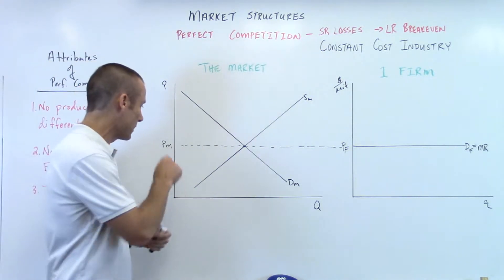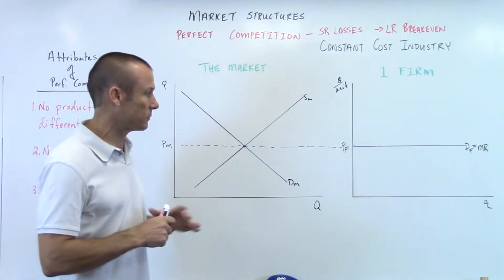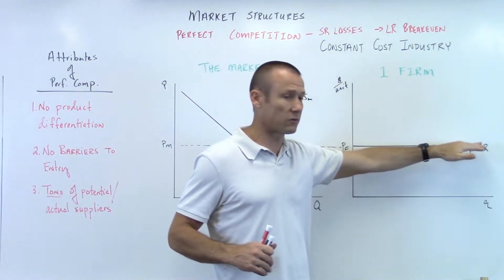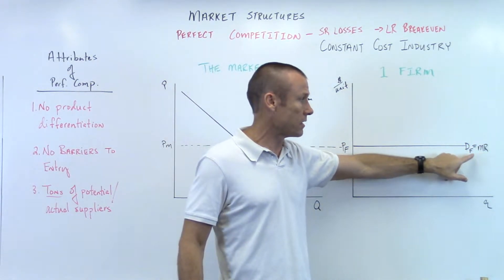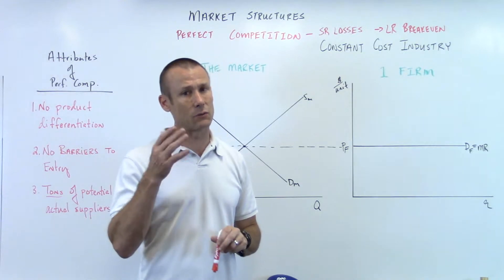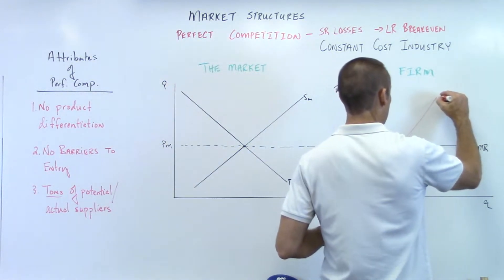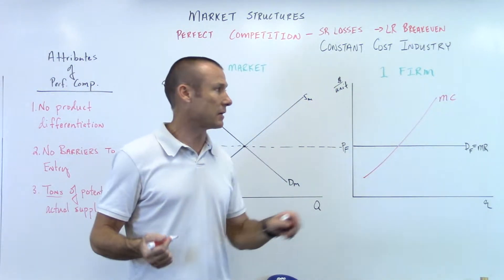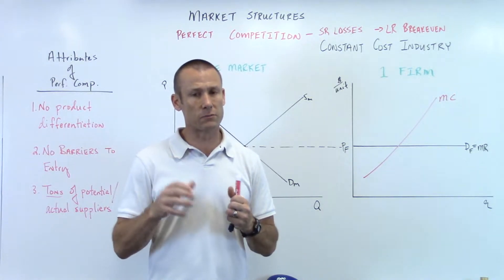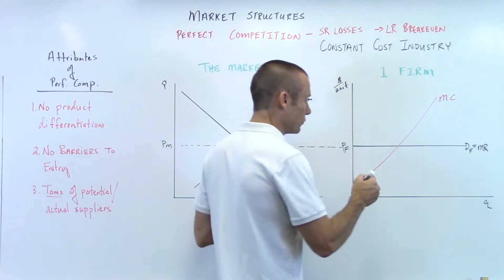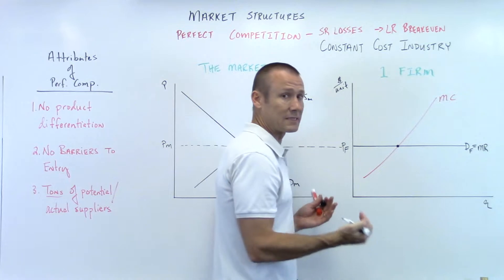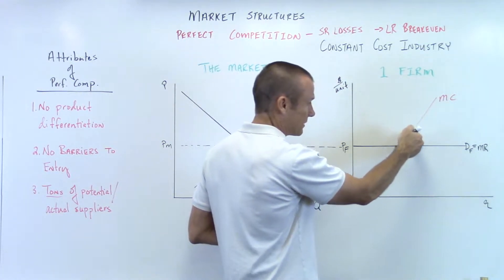So, short run losses. We've got the market and we've got the firm. Why do we need the market? Price market — the market determines the price. The firm is a price taker. Price firm gives us the demand firm and the MR curve. What's the next curve we need? We need the MC, because it's the intersection of MC and MR that gives us our output level. Firms are making decisions at the margin — they produce goods as long as MR is above MC, and they stop when they're equal.